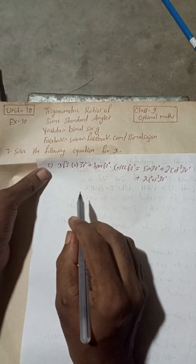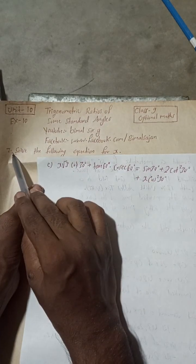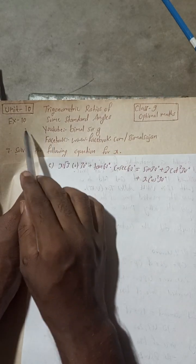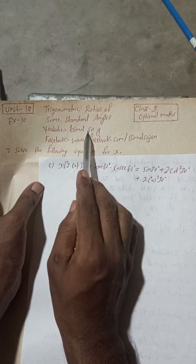Radhe Radhe, Jaya Sri Krishna. Class 9 and 10 students, welcome back to Vimal Sarji YouTube channel. This is question number 7e of exercise 10, unit 10, trigonometric ratios of some standard angles. If you check the playlist of Vimal Sarji, you will find most of your class 9 and 10 exercises.